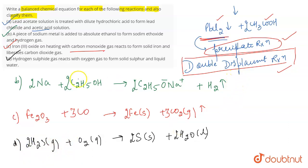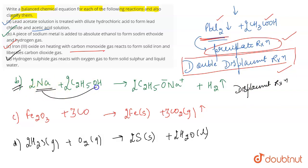Now you also have to identify the type of reaction. For the sodium and ethanol reaction, this is a displacement reaction. Why? Because sodium is displacing hydrogen here. Sodium, being more reactive than hydrogen, displaces hydrogen and forms sodium ethoxide (C₂H₅ONa), while hydrogen gas is liberated. That is why this is a displacement reaction.